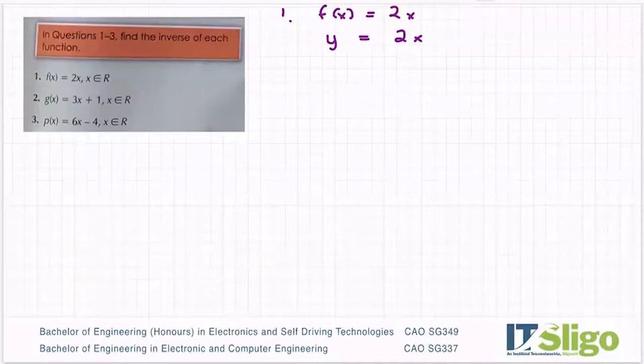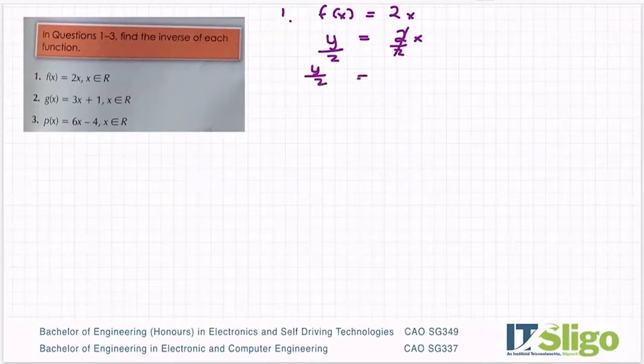We then rearrange it so that we have x on its own, so that basically the equation is written in terms of x, so I'm going to divide across by 2. So I have y over 2 is equal to x, or of course, x is equal to y over 2, which is the same thing.